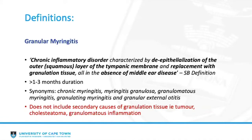As we know, granulation tissue, like in any other area of the body, can be secondary to multiple causes including cholesteatoma, benign neoplasms, malignant neoplasms, and tuberculosis or other granulomatous conditions.